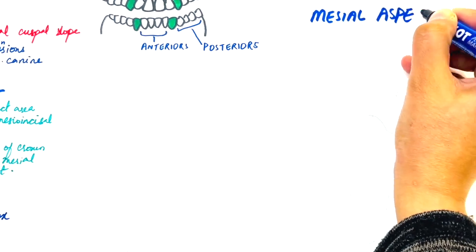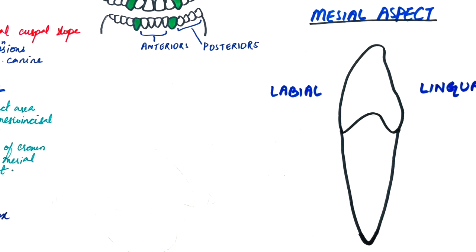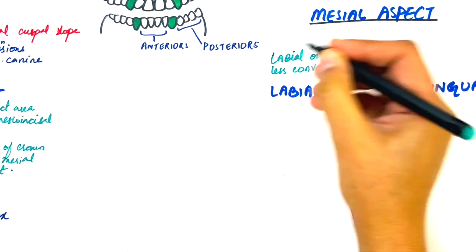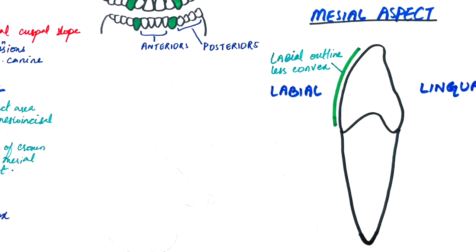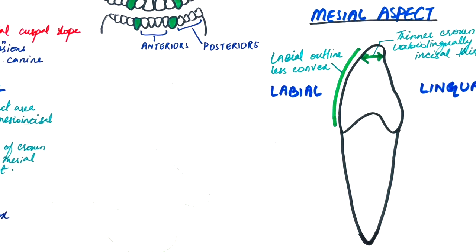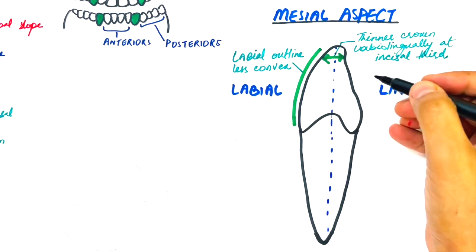From the mesial aspect, the labial outline of the crown is less convex than the labial outline of the maxillary canine and this is because of the less prominent labial ridge in the mandibular canine. The singulum is not so pronounced and the crown at its incisal third is thinner labulingually which makes the cusp appear more pointed.